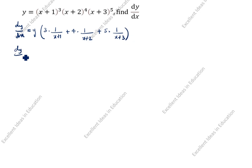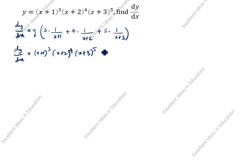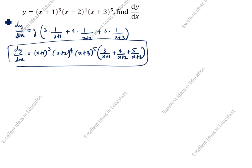So dy/dx is equal to y. What is y? y is (x+1)³ · (x+2)⁴ · (x+3)⁵, open the bracket: 3 divided by (x+1) plus 4 divided by (x+2) plus 5 divided by (x+3). This is the answer. This is the first method. When you differentiate x, it comes to 1 only, so no need to write 1 here.